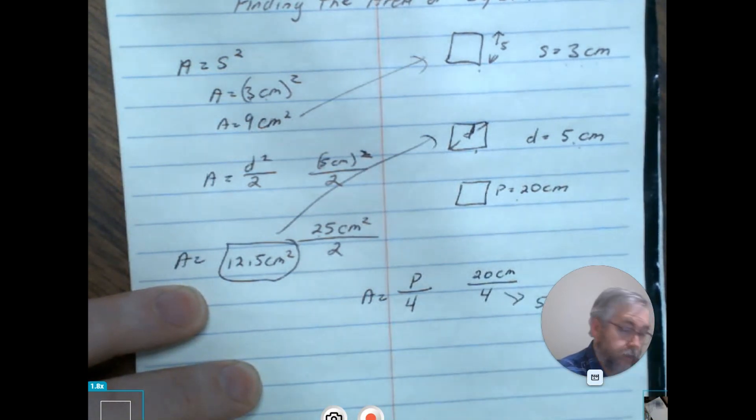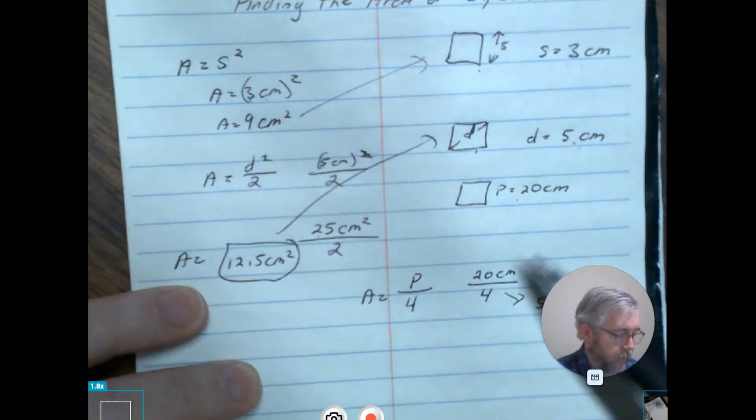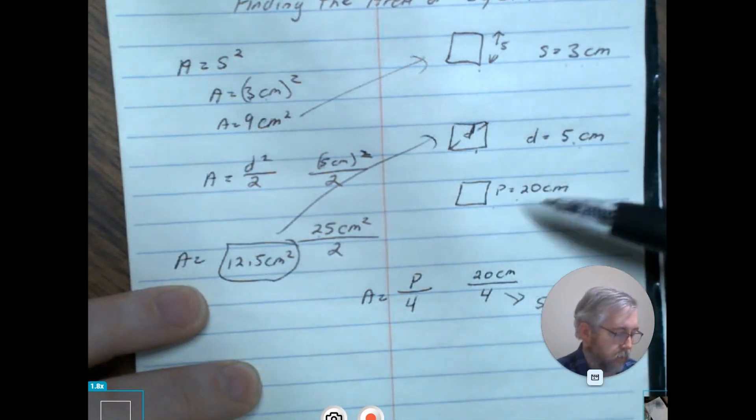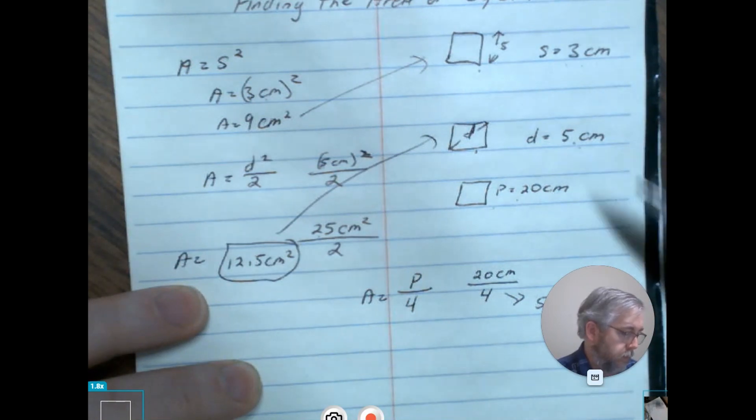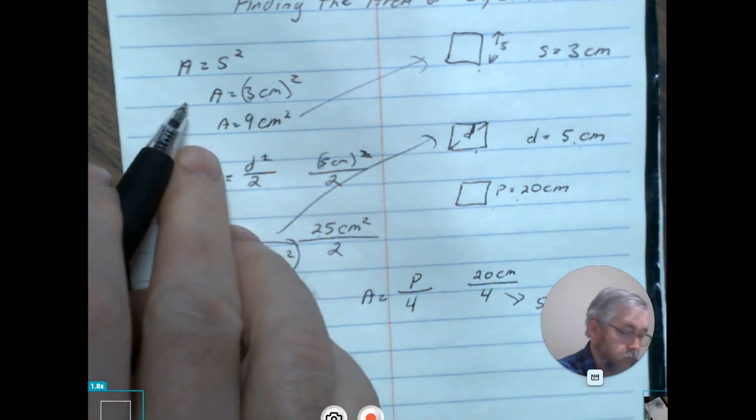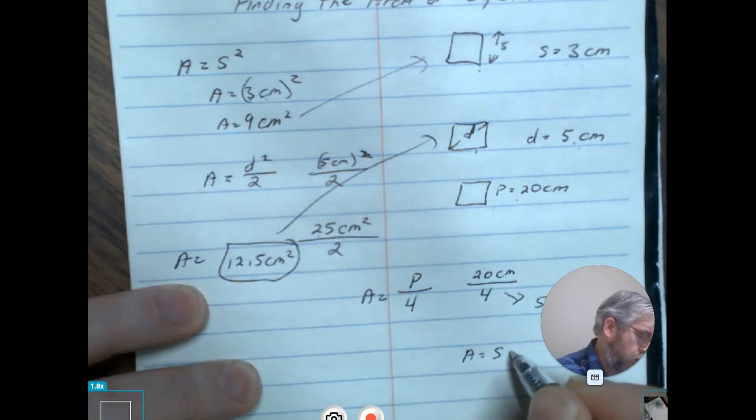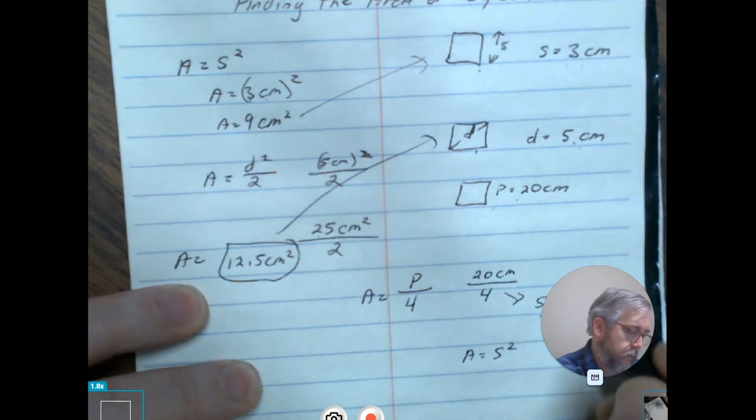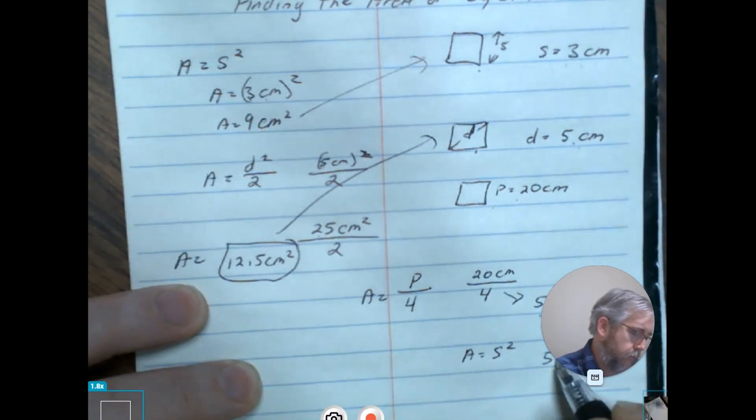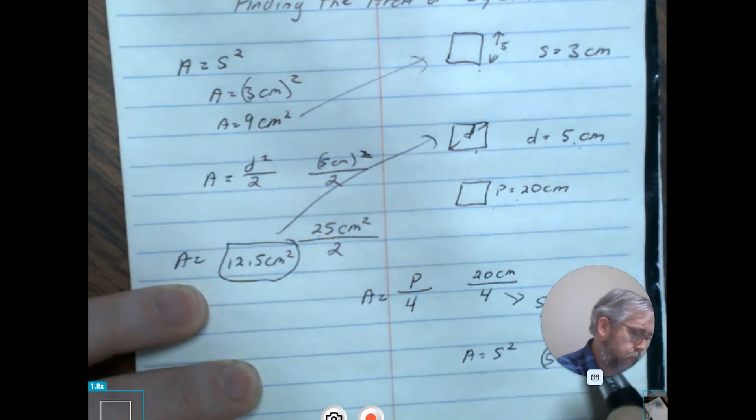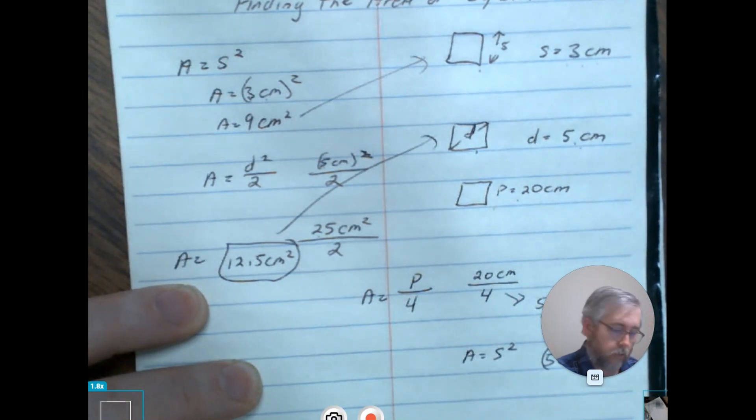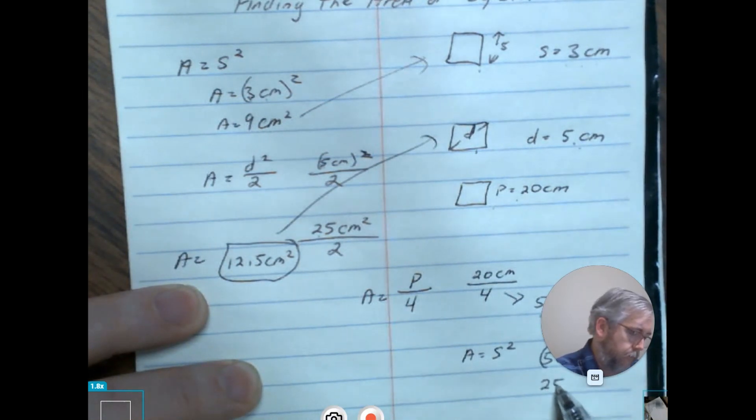But we're not done yet. This only provides us one of the four sides as far as the length. We still have to find the area, and if you recall the first one, area equals s squared. Now that we have an actual side here, we can use this: five centimeters squared. Five times five is 25 centimeters squared.